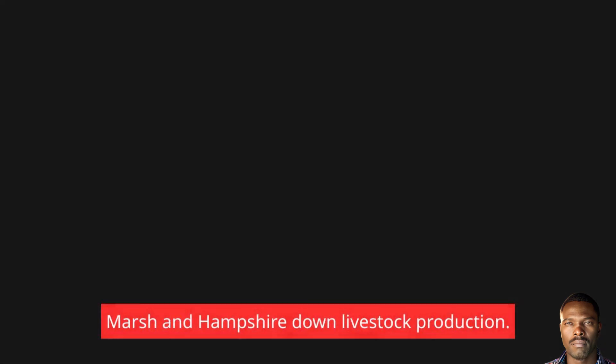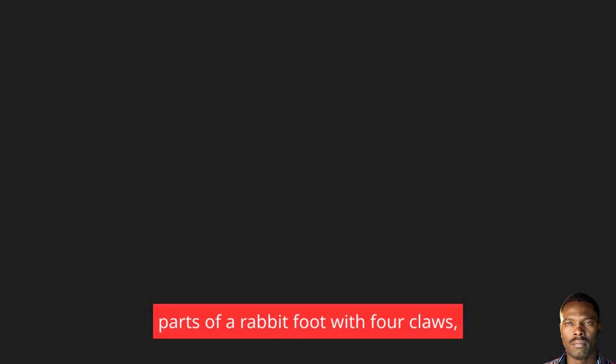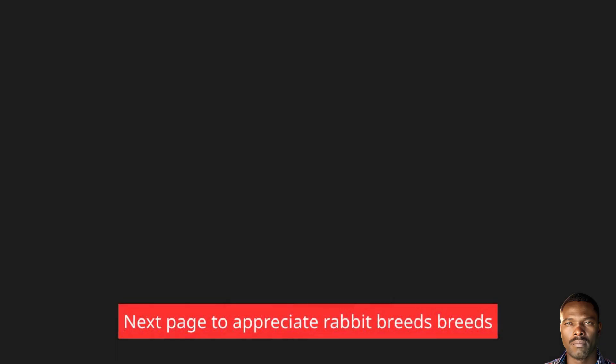Livestock production. Common rabbit breeds. Study the parts of a rabbit. Parts of a rabbit: foot with four claws, four limbs. See video on the next page to appreciate rabbit breeds.